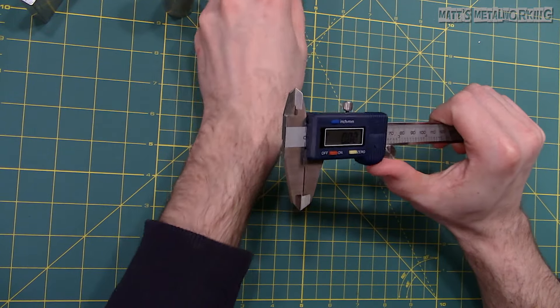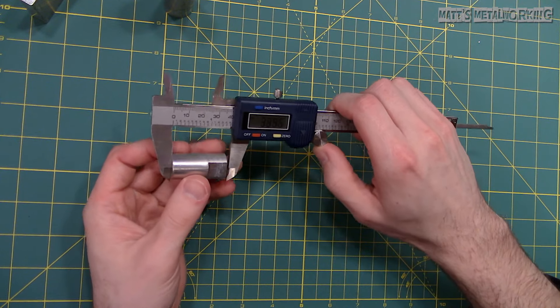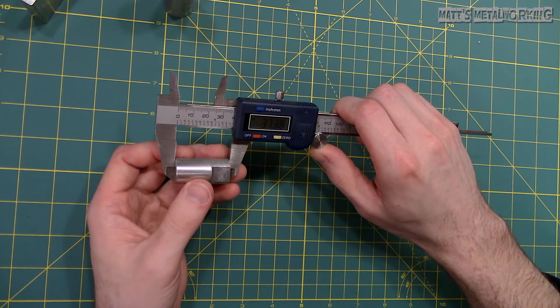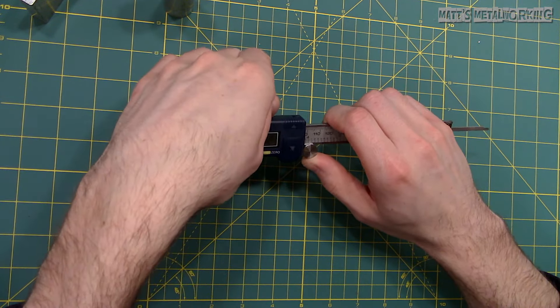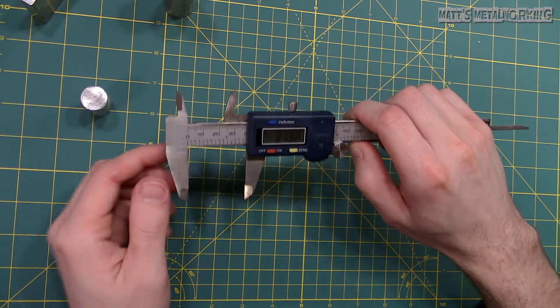When using this caliper we can easily switch between measuring systems. Imperial to metric or metric to imperial with the press of a button so no calculations or conversions are required.